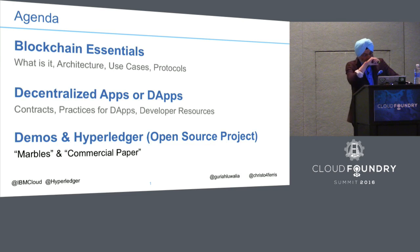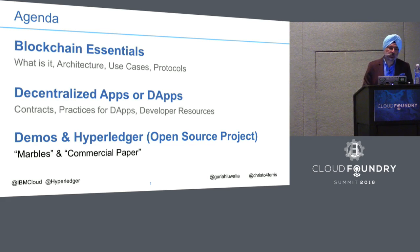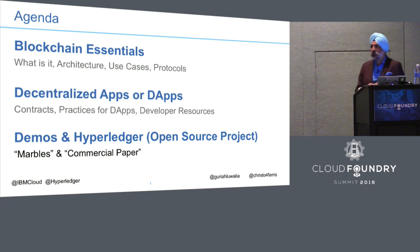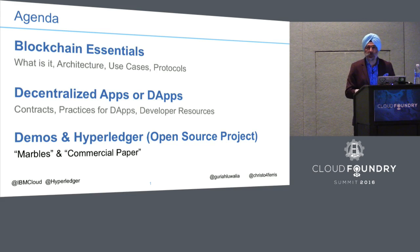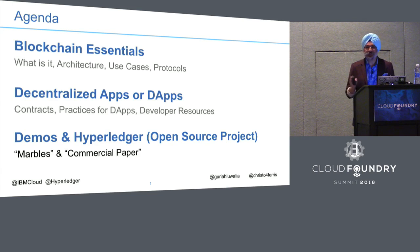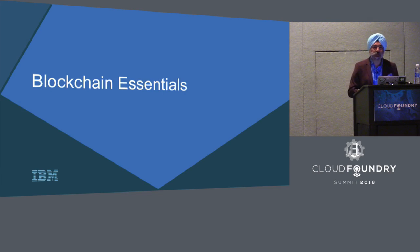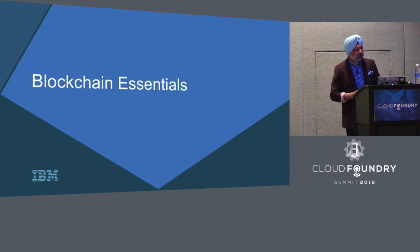In the dApps section, you'll see continuity from the previous section: smart contracts, certain practices and characteristics related to dApps, and developer resources. Then Chris will demo two applications — one is Marbles and the other is Commercial Paper. Just the names should be intriguing enough to leave the description for later.